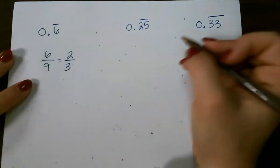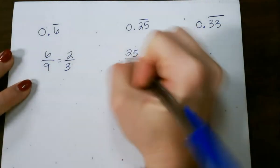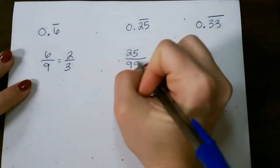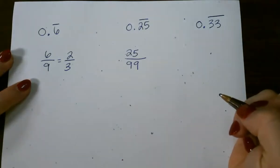For our second example, 25 is the numerator, and since I have two digits, I'm going to write two 9's, and I cannot simplify that, so I leave it just like that.